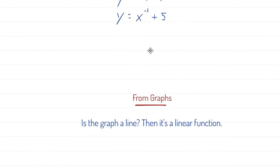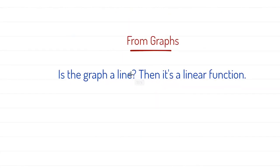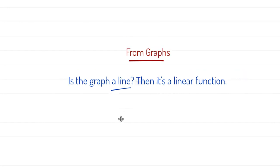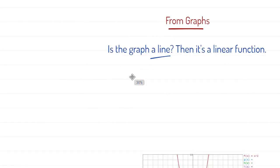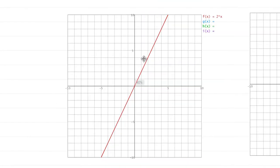The last method is: given a graph, can we determine if it's a linear function? Here's the quick trick — look at the graph. Is it a line? Then it's a linear function. If it's not a line, it's not a linear function.